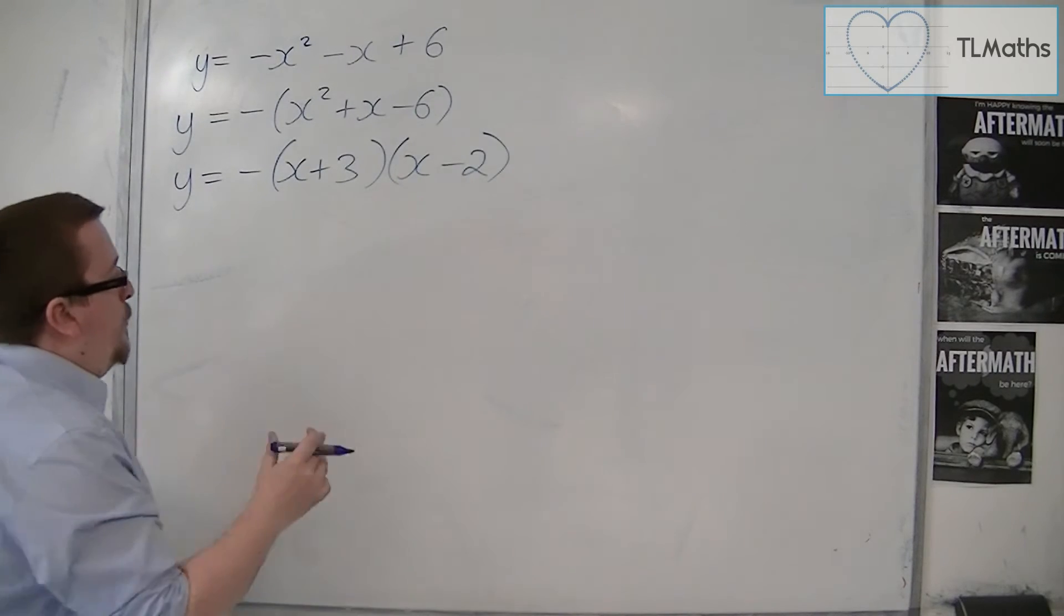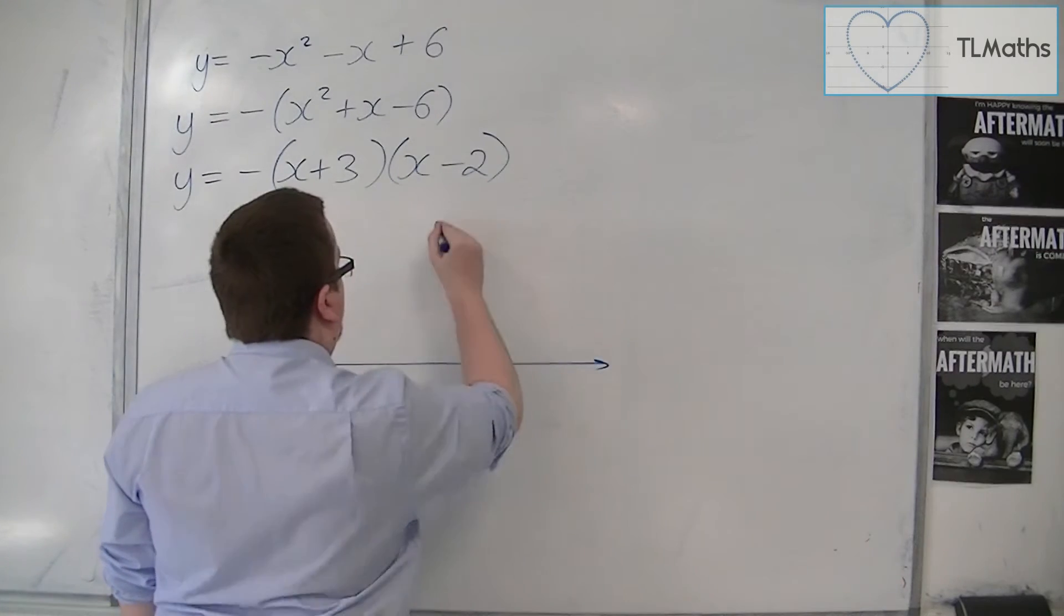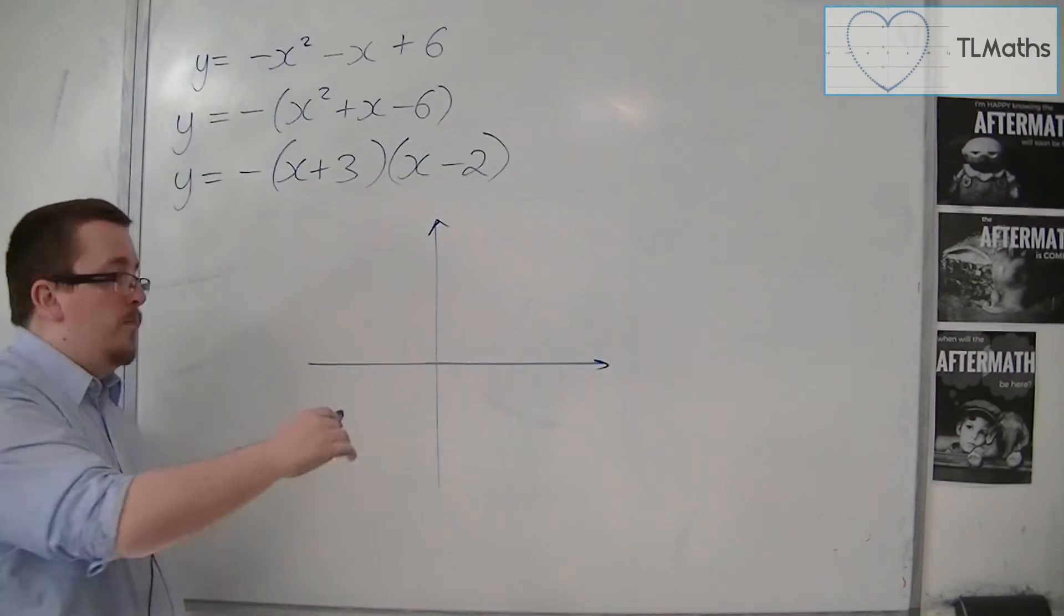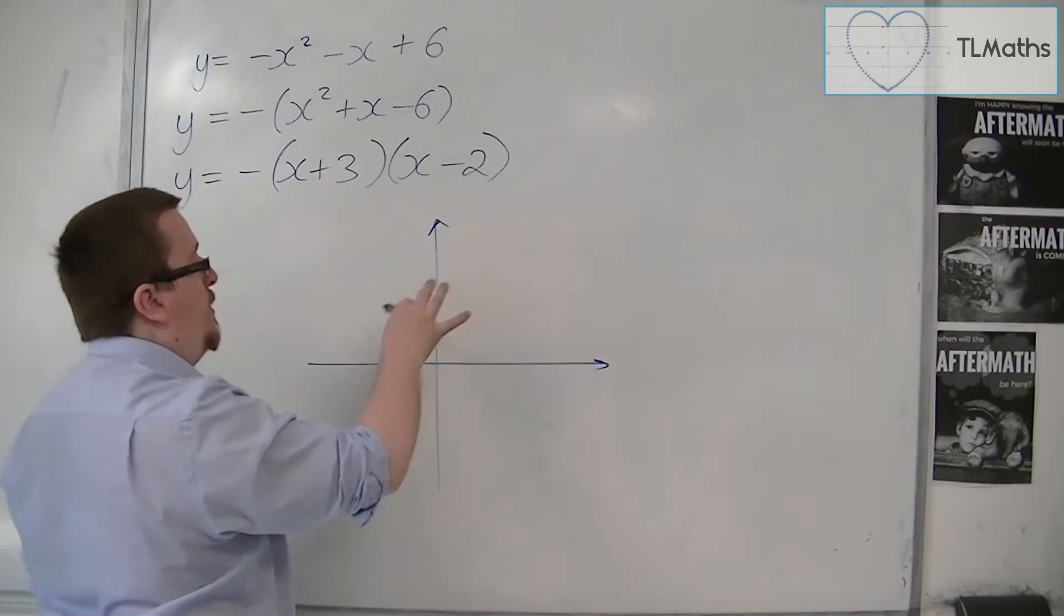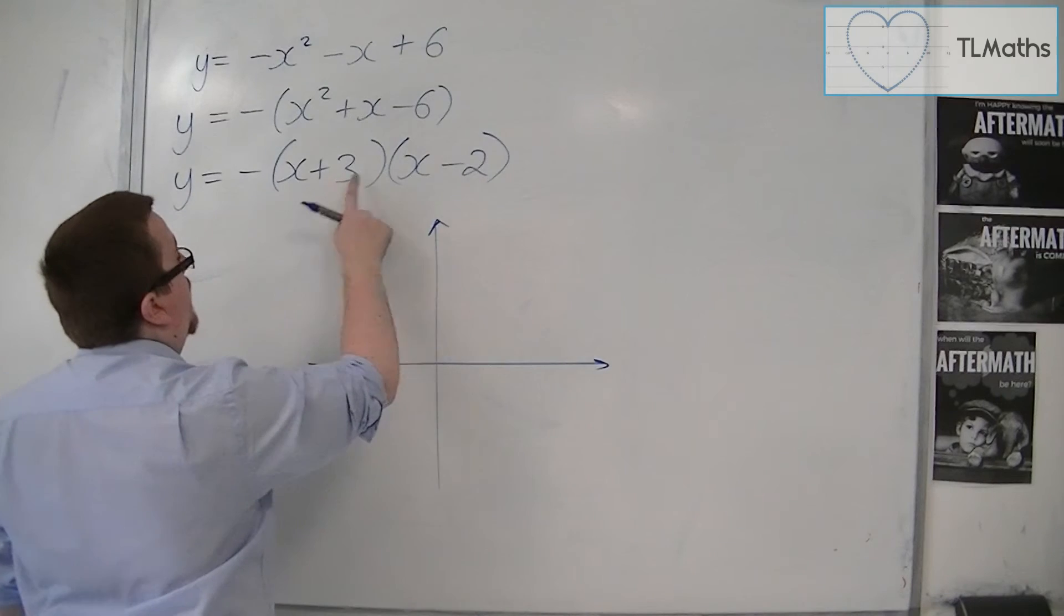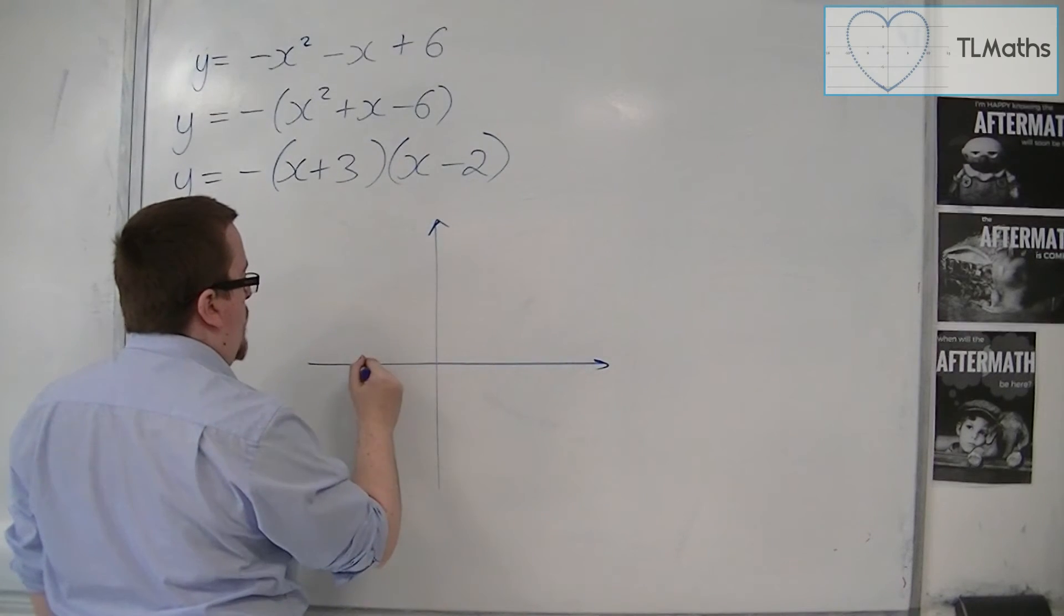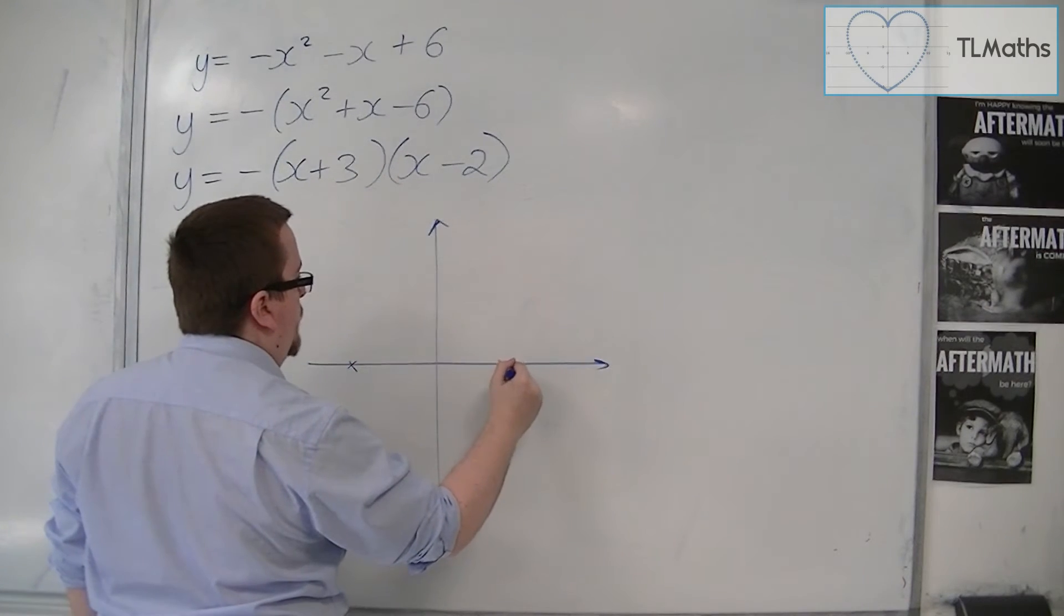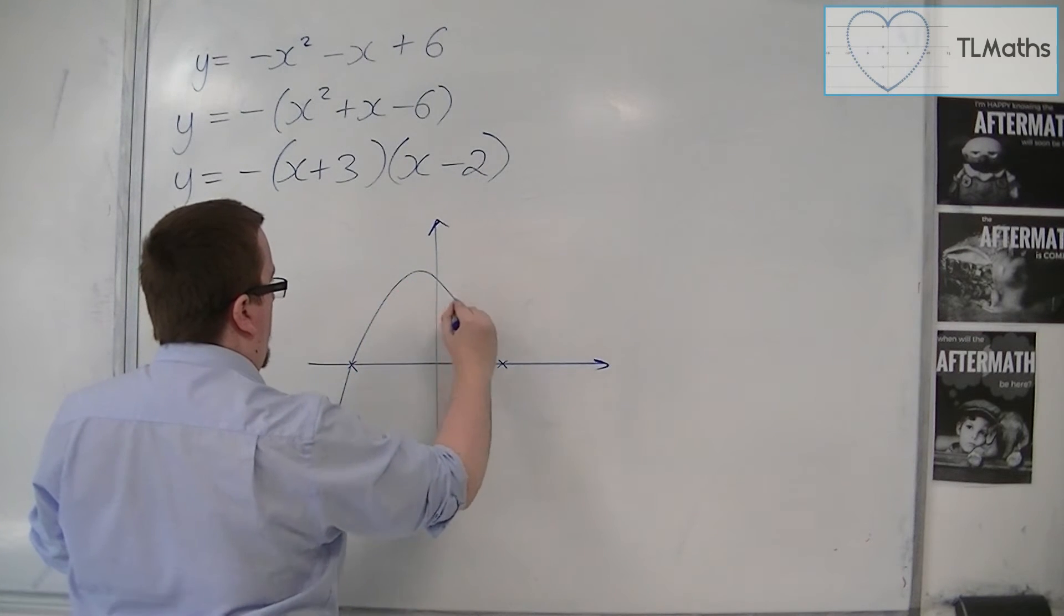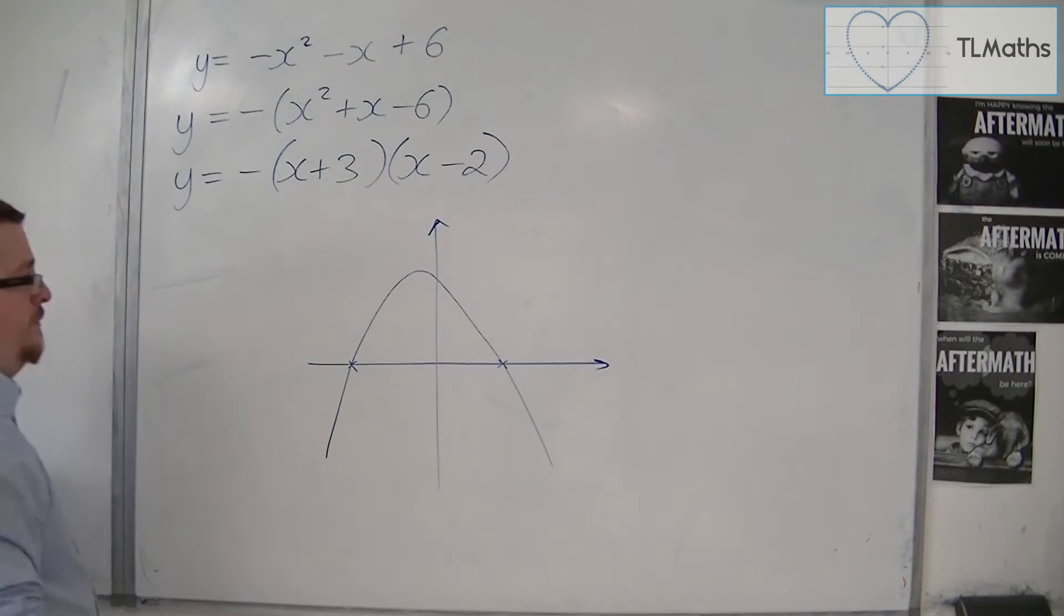Now when we're sketching, what is important to notice is that minus sign, which means that the parabola is upside down to how we usually draw it. So we can see that it's going through minus 3 and 2, and so the parabola must look something like this.